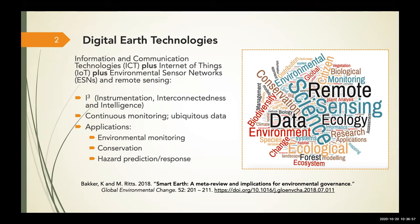That's instrumentation and interconnectedness. But the third element is, of course, artificial intelligence — the application of technologies such as machine learning or computer vision to analyze the exponentially larger amounts of data now being generated from ecosystems around the world. This enables continuous monitoring, spatially and temporally ubiquitous data, with some very interesting applications. Environmental monitoring is moving forward by leaps and bounds, including a recent headline in Nature about mapping every individual tree on Earth.